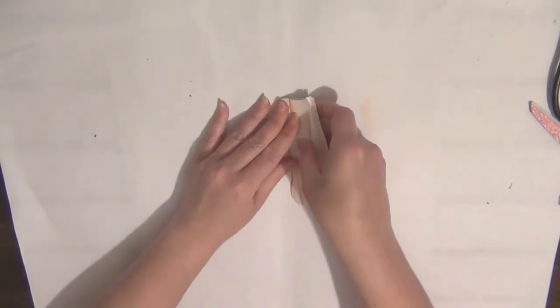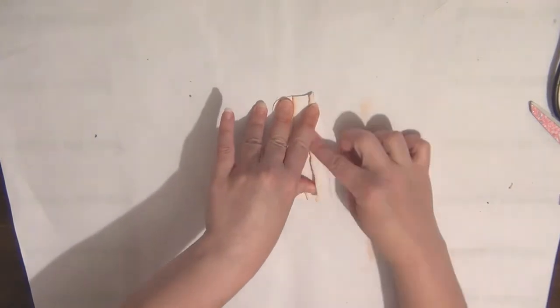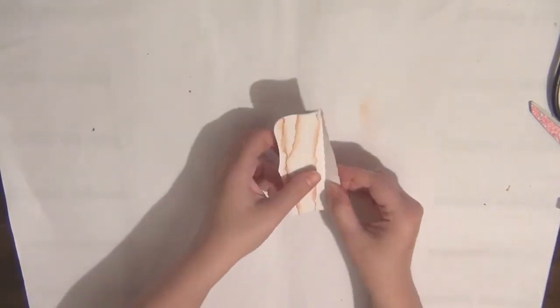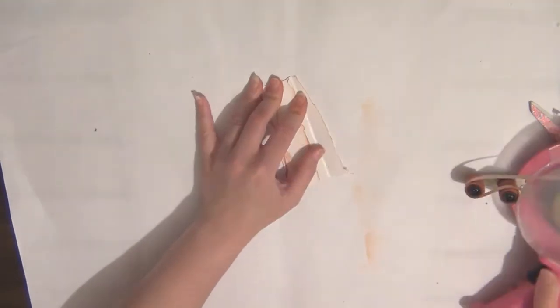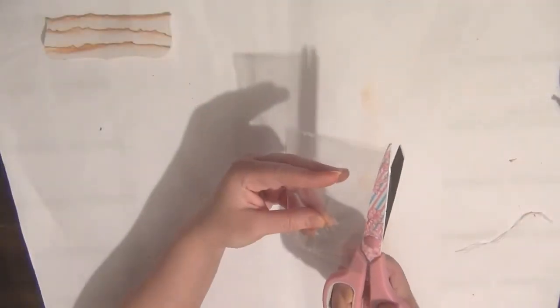Next, fold this in half. As you can see here, I had a piece of paper that was not stuck down, so just go ahead and add a little bit of adhesive and glue that down.